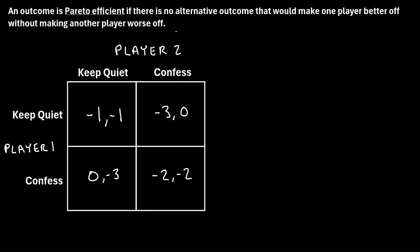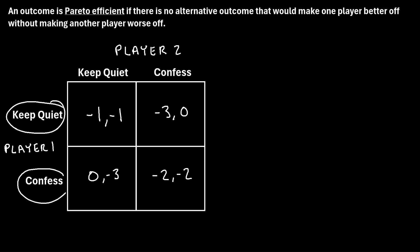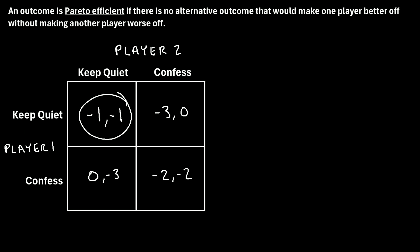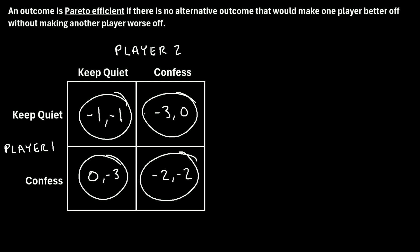To understand this idea, let's take a look at the most classic game in the field of game theory — the Prisoner's Dilemma. In this game, we have two players, player one and player two. Both players are being interrogated by the police and they each have a choice to either keep quiet or confess. There are four possible outcomes, and let's determine if each of them is Pareto efficient or not.